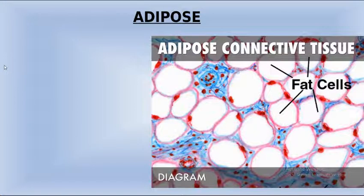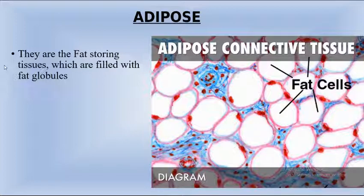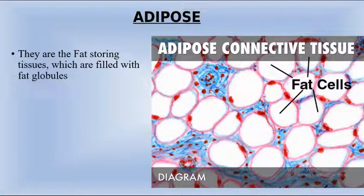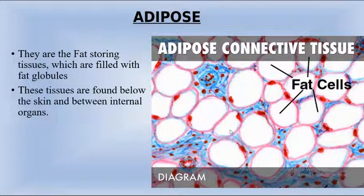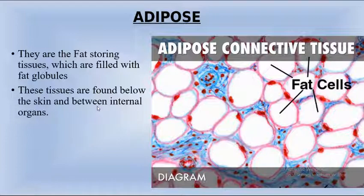The next type is adipose connective tissue. Here you can see its picture. These are fat-storing tissues filled with fat globules. In the picture, you can see round or spherical structures — these are fat cells, responsible for storing fats. Adipose tissue is found below the skin and between internal organs.